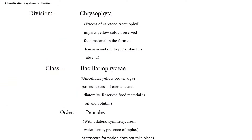As usual, let us start with classification or systematic position. Division: Chrysophyta. Excess of carotene, xanthophyll imparts yellow color. Reserved food material in the form of glucosin and oil droplets. Starch is absent.